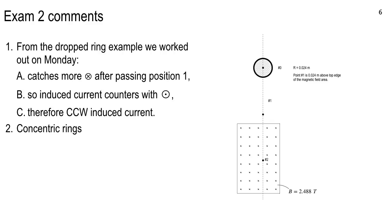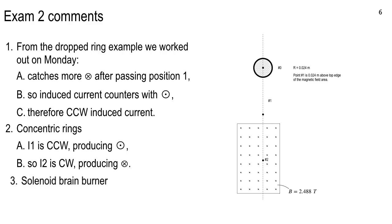Okay, the concentric rings problem. Current one was counterclockwise, producing outward, so the induced current was inward, which means clockwise. The solenoid brain burner started with a simple calculation. And you had the formula for the solenoid central field in matching. And I think most of you got that.